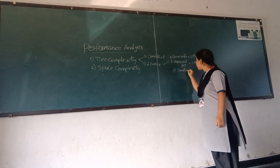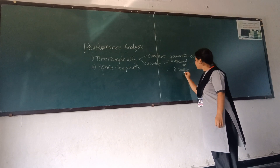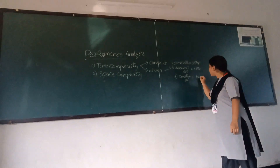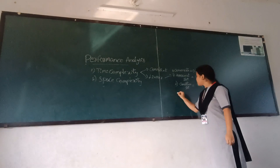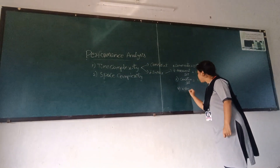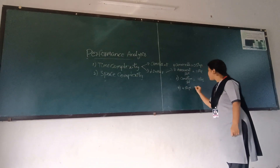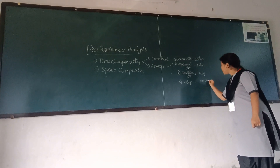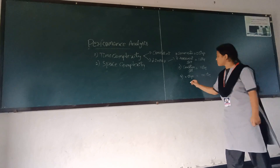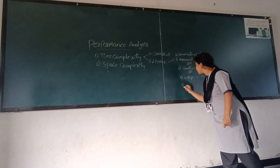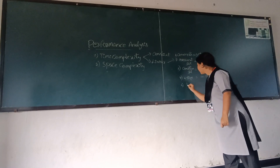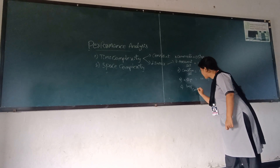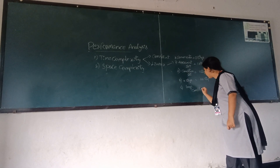A condition statement counts as one step check in the code. N steps are counted for a loop. Going through the loop, N plus one steps are counted in total — going through linear complexity itself. The next step completes the analysis, and there are no remaining steps.